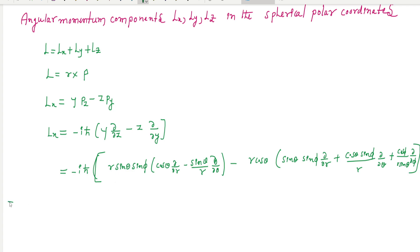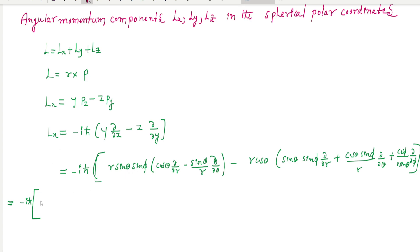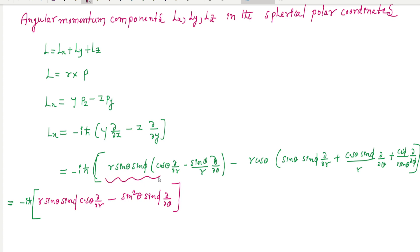So try to multiply. Minus iħ times the remaining terms: r sinθ sinφ cosθ times ∂/∂r, minus sin²θ sinφ times ∂/∂θ. Here r gets cancelled and the remaining term is sin²θ sinφ times ∂/∂θ.